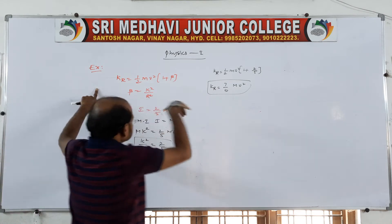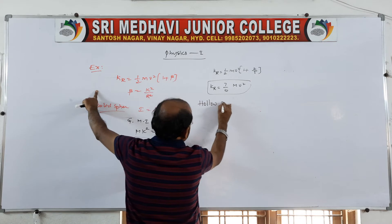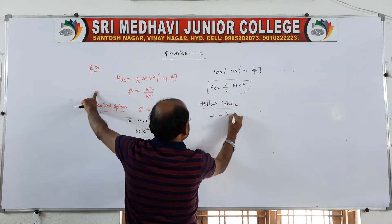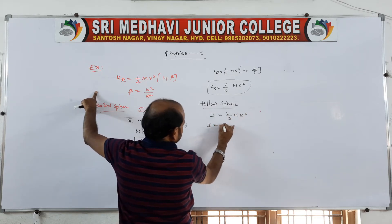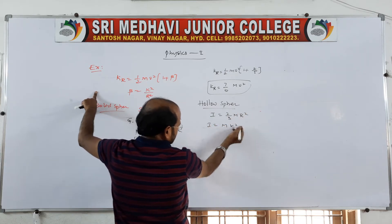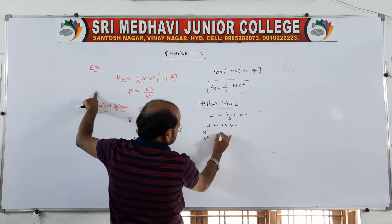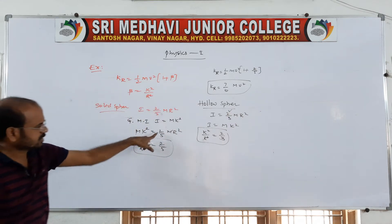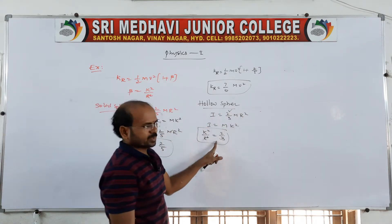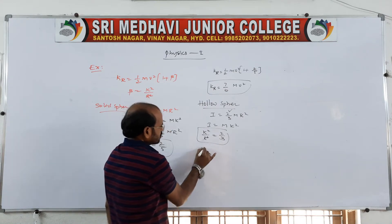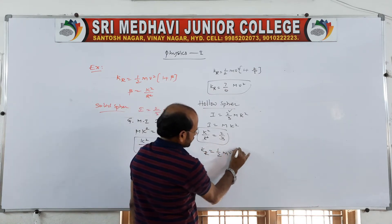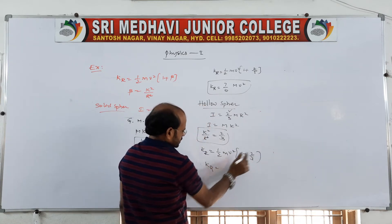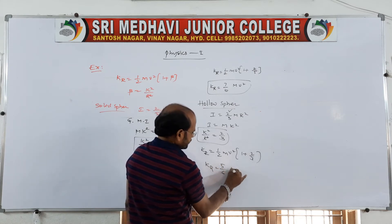Now go for the next one, that is a hollow sphere. We know the hollow sphere moment of inertia is 2/3 mr squared. So from general moment of inertia mk squared, directly k squared by r squared equals 2/3. K_rolling equals 1/2 mv squared of 1 plus 2/3, so K_rolling equals 5/6 mv squared.